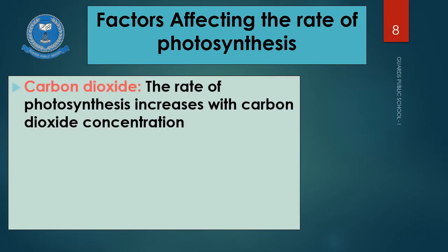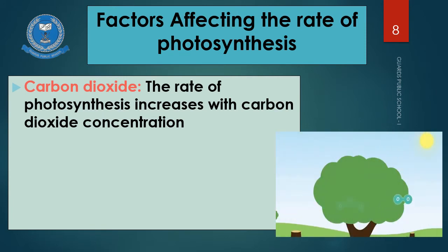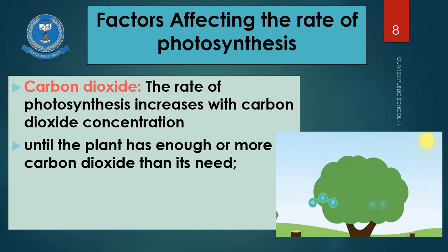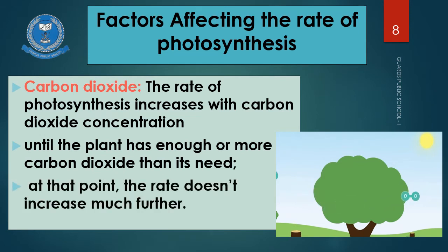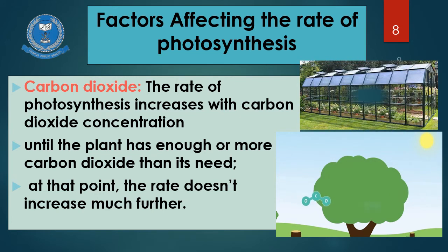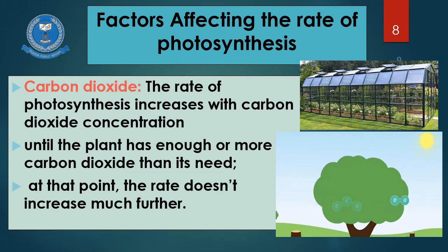Carbon dioxide: the rate of photosynthesis increases with carbon dioxide concentration until the plant has enough or more carbon dioxide than it needs. At that point, the rate doesn't increase much further. Carbon dioxide ki concentration increase hogi, to photosynthesis ka rate bhi speed up ho jaayega. Like light and temperature, carbon dioxide bhi plant ko limited amount mein hi required hoti hai. In a greenhouse, the amount of carbon dioxide is sometimes increased by pumping in this gas. This increases the rate of photosynthesis and makes the plant grow faster. Kyunki greenhouse mein plants glass house ke andar maujood hote hain, isliye carbon dioxide ki concentration ko increase karne ke liye isko pump kiya jaata hai, jisse plants tezi se grow karne lagte hain.